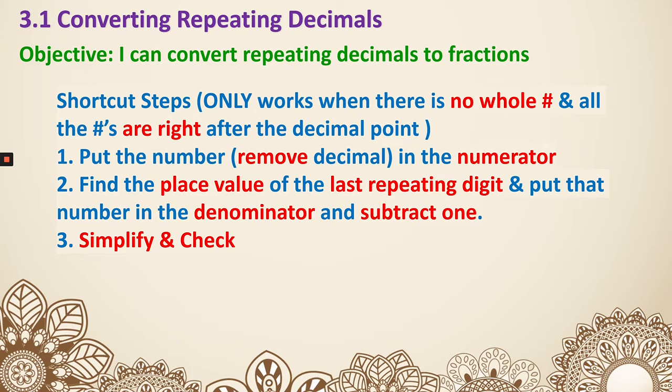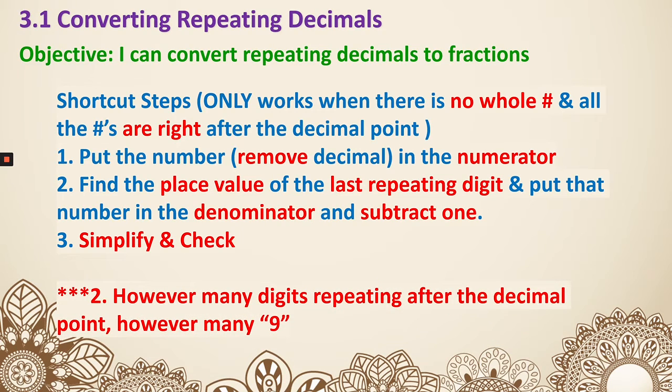First, we put the number, meaning remove the decimal, in the numerator. Next, we find the place value of the last repeating digit and put that number in the denominator, and then subtract 1. Lastly, we'll simplify the fraction and check. Here's another way to remember the second step: however many digits are repeating after the decimal point, that's however many nines we put.